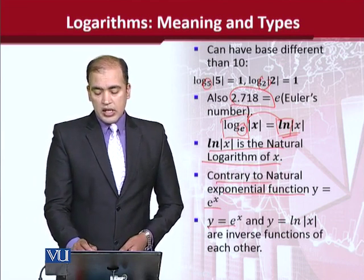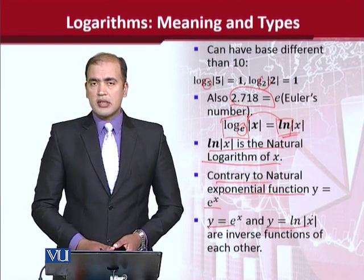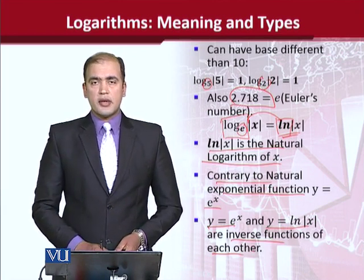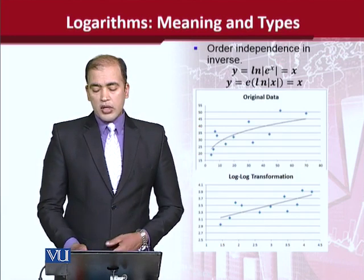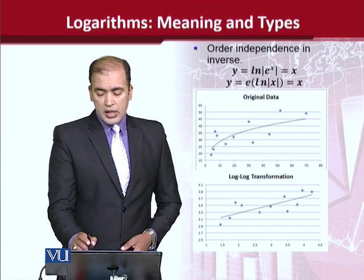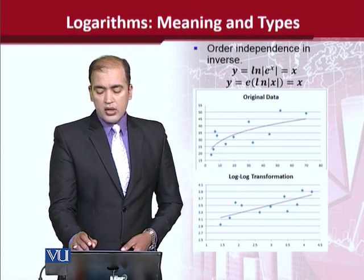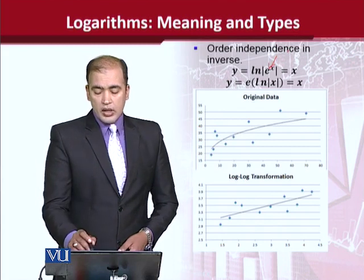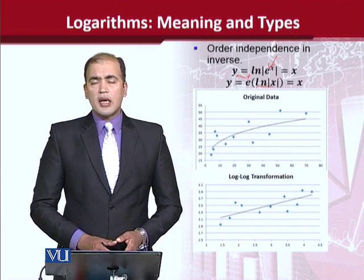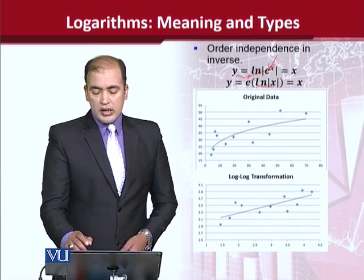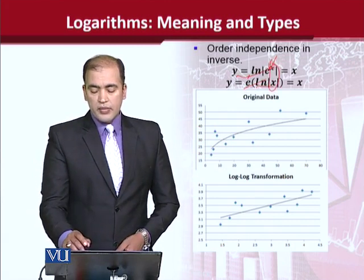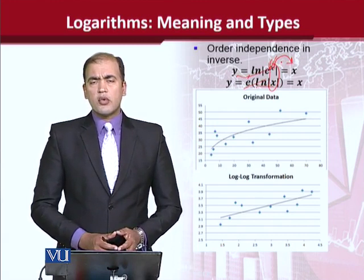The natural exponential function and the natural logarithmic function are inverse functions of each other. For example, E raised to the natural log of x gives x, because E and natural log cancel out, leaving x. This means they are reciprocals of each other.